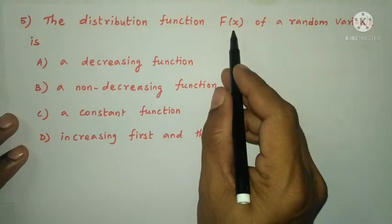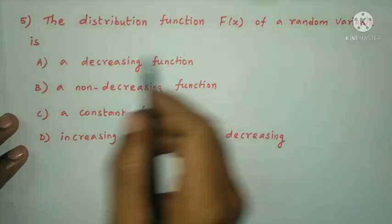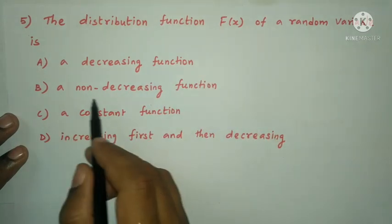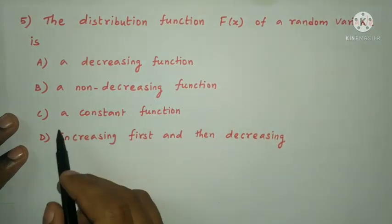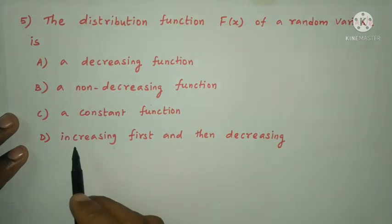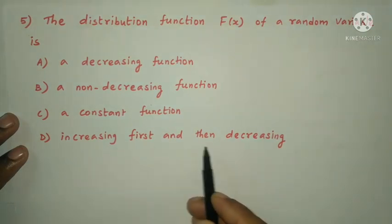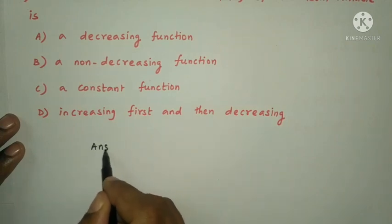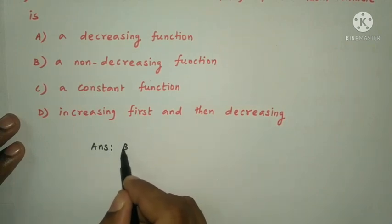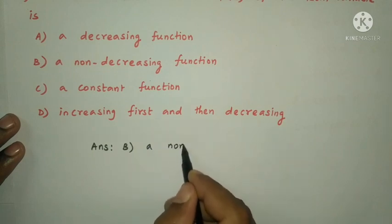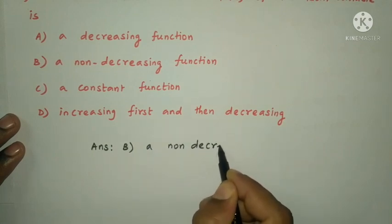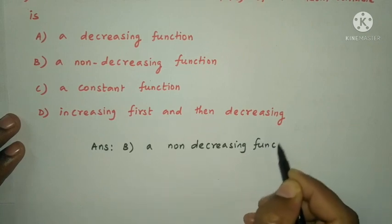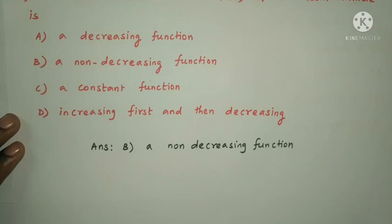Next question: the distribution function F(X) of a random variable is a decreasing function, a non-decreasing function, a constant function, or increasing first then decreasing? The answer is that the CDF F(X) is a non-decreasing function. The answer is option B.